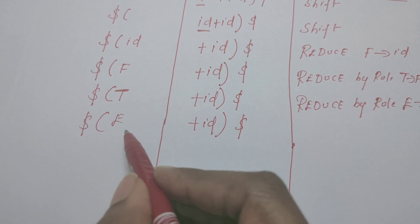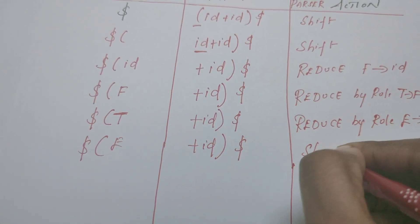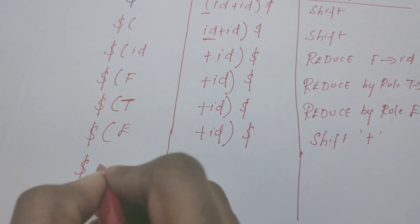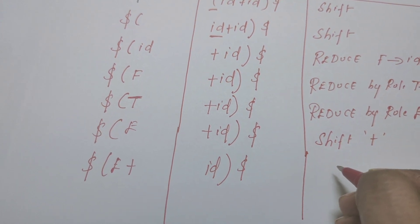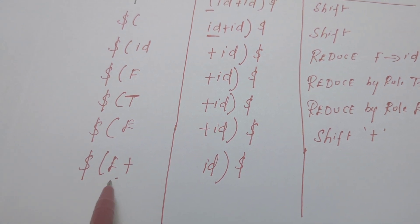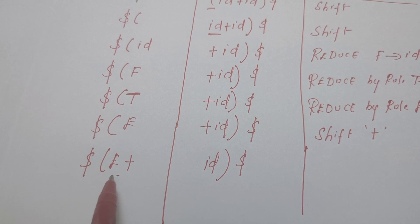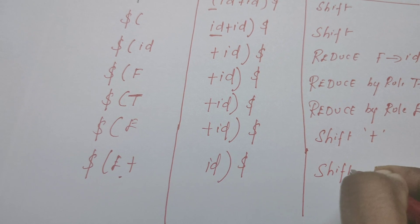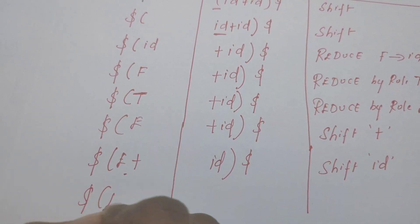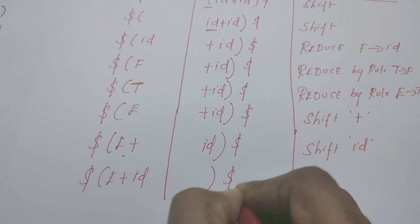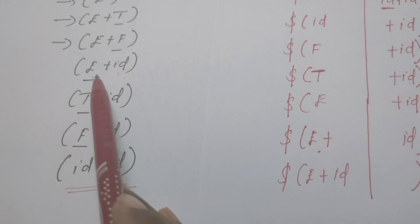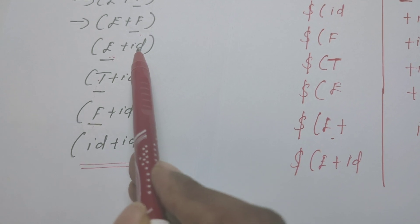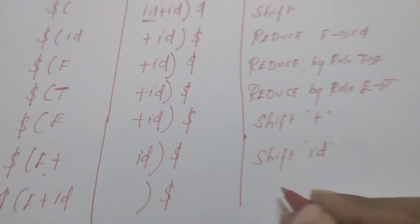Next, the plus symbol is shifted onto the stack. The stack now holds (E+, and the input buffer contains ID)$. Since E+ is not a perfect handle, the only possible action is shift. ID is shifted, giving stack (E+ID and input buffer )$. Now ID can be reduced to F by rule F → ID, following the rightmost derivation.